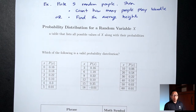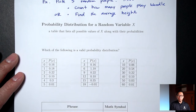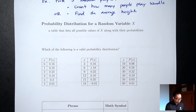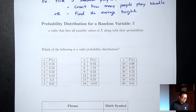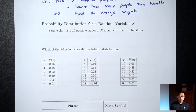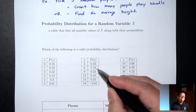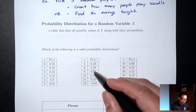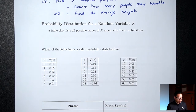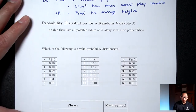Looking at the second table, two things stand out. These are supposed to be probabilities, and probabilities are always numbers between 0 and 1. I see a 1.18 — that's not between 0 and 1. I also see a negative 0.01 — that's also not between 0 and 1. So this second table is invalid because probabilities need to be between 0 and 1.